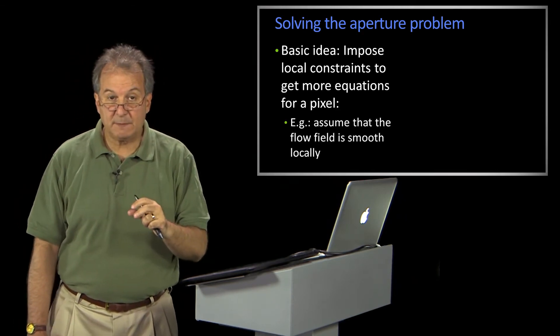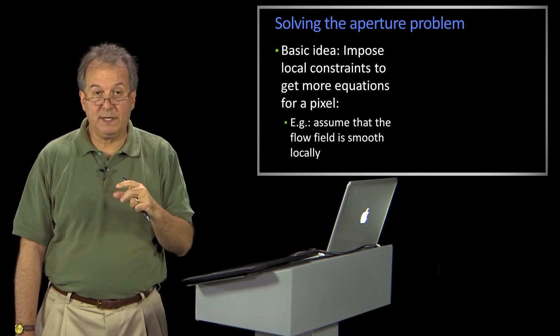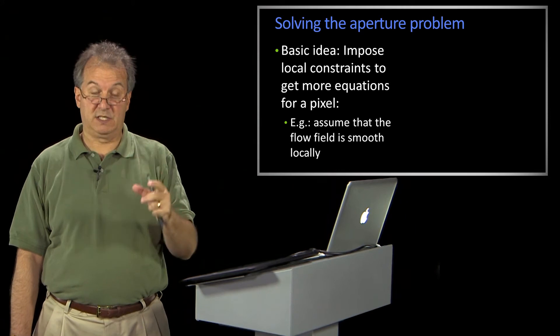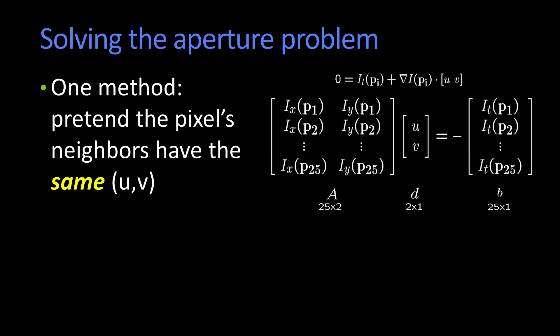So for example, we talked about maybe we'll assume that locally, right around this point, the motion field is very smooth. In fact, how smooth do we want to assume? How about we assume that it's actually the same value? That is, over a window, we're going to assume that UV is the same value everywhere.